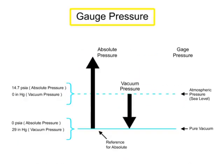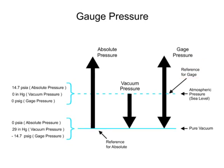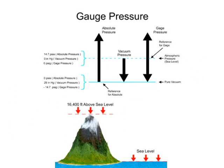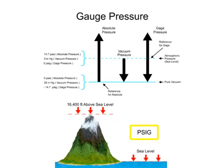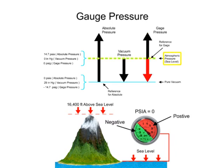Gauge pressure scale uses atmospheric pressure as the reference. The unit of measurement for gauge pressure is pounds per square inch gauge, abbreviated as PSIG. At sea level, the gauge measurement is 0. Measurement of gauge pressure can be positive or negative and is determined by whether it is above or below atmospheric pressure.